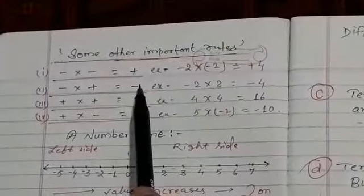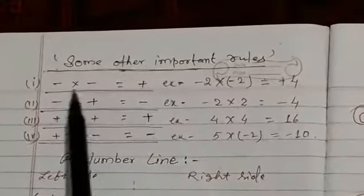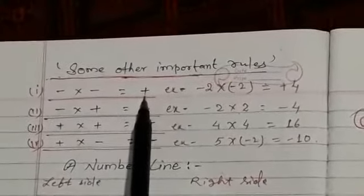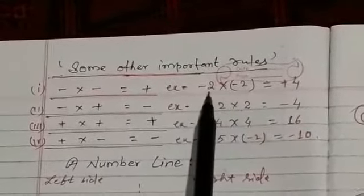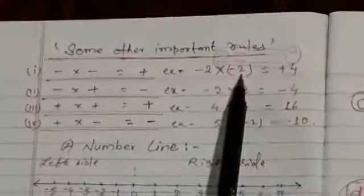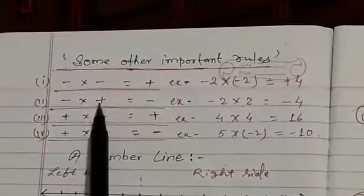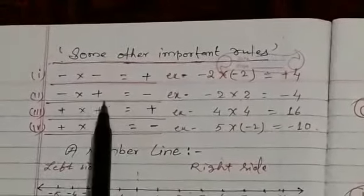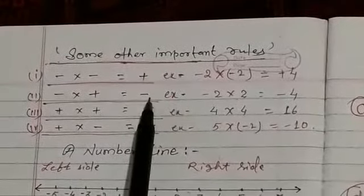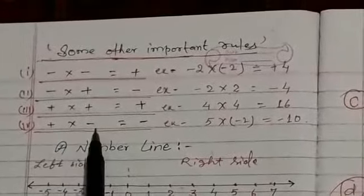Some other important rules should also be remembered. When same signs are multiplied: minus multiplied by minus becomes a positive sign. For example, minus 2 multiplied by minus 2 — the sign becomes plus, and 2 times 2 is 4, so the result is plus 4. When a negative sign and a positive sign are multiplied, it becomes a negative sign: minus 2 multiplied by plus 2 becomes minus 4. Plus multiplied by plus becomes plus, and plus multiplied by minus becomes minus.